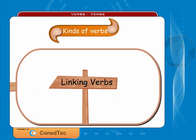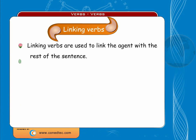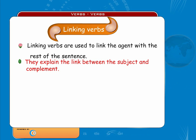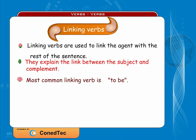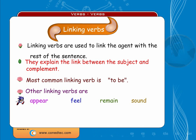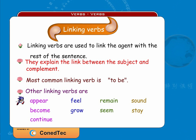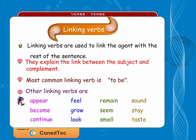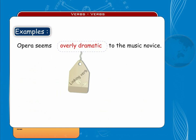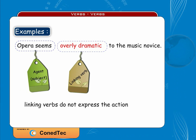Linking verbs link the relationship between the agent and the rest of the sentence. They explain the connection between the subject and its complement — that which completes the subject's description. The most common linking verb is 'to be.' Some other linking verbs are: appear, feel, remain, sound, become, grow, seem, stay, continue, look, smell, and taste. Example: 'Opera seems overly dramatic to the music novice' — 'overly dramatic' describes the subject 'opera,' but does not express an action that opera performs.